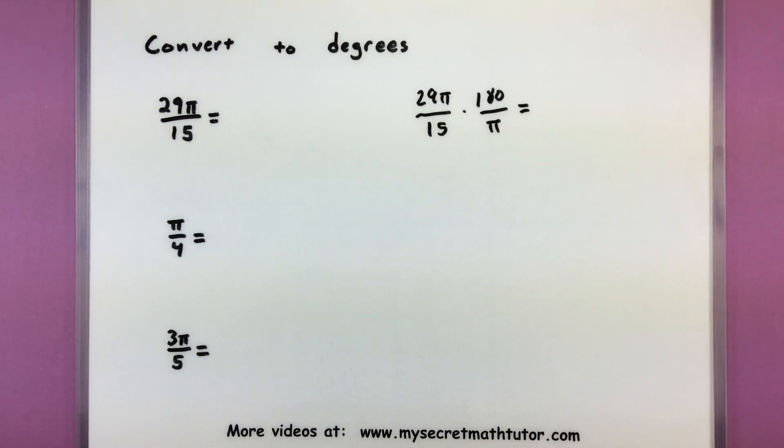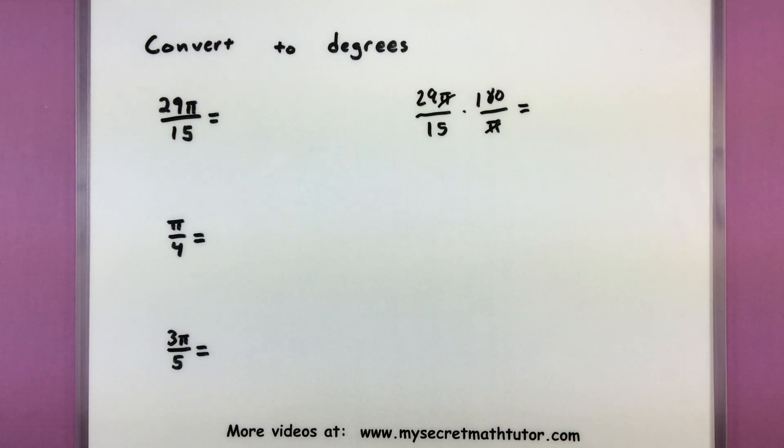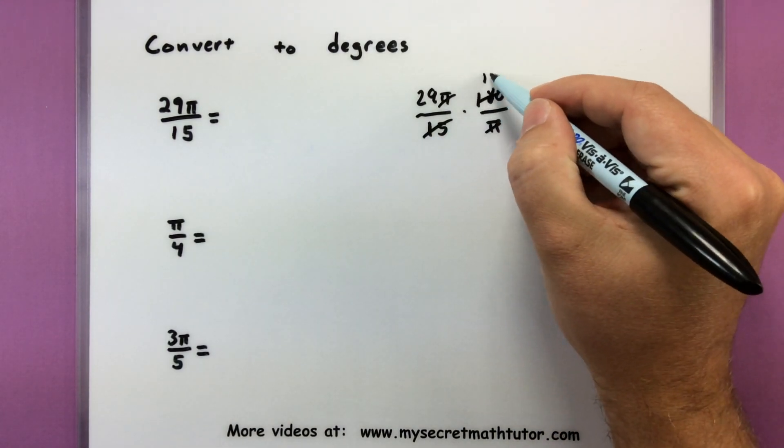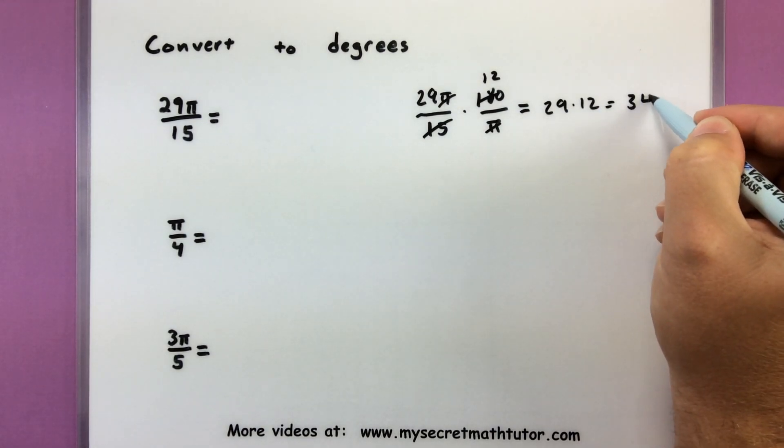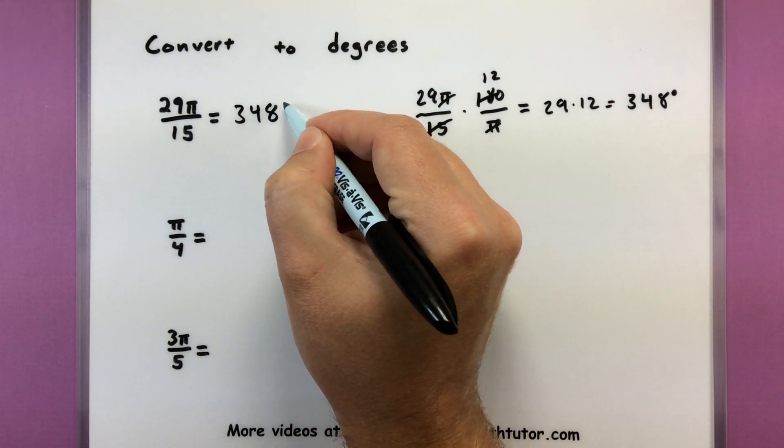Alright, let's see what we've got. So, pi's are common, they will cancel out this time. And now I'll just be looking at the numbers that are left over. 15 goes into 180 12 times. So now I just have 29 times 12. So 348 degrees. There we go, there is our degree measure.